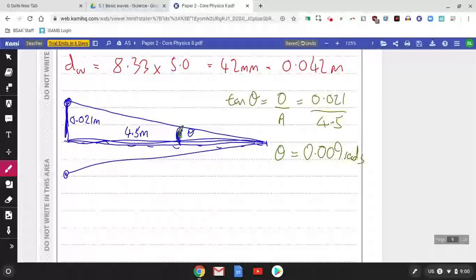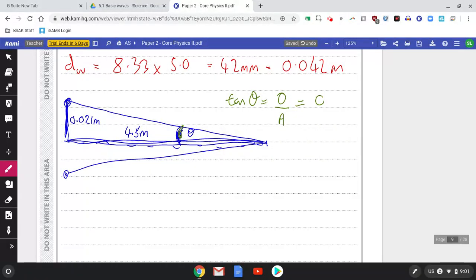So tan theta is 0.021 over 4.5. Now I turned my calculator to radians. That gave me a theta of 0.0046 radians. Now for this total angle here, we just double it. So doubling that, we've got 0.009.